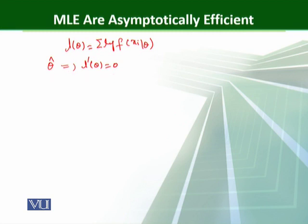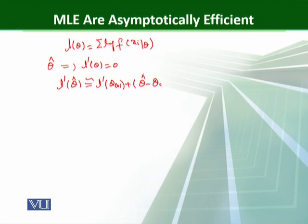Applying the Taylor expansion of L dash theta around the point theta naught, we obtain: L dash theta hat is approximately equal to L dash theta naught plus L double dash theta naught times (theta hat minus theta naught). We consider only two terms in the Taylor expansion.